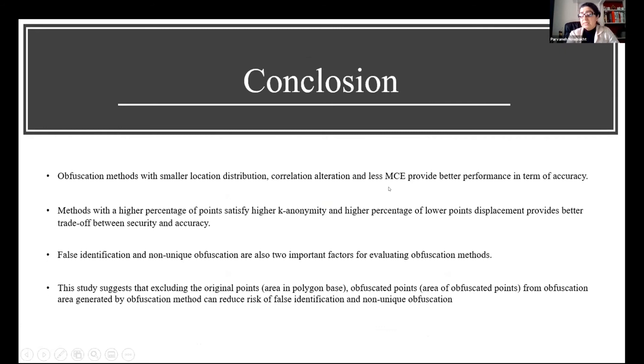We can summarize all these results as: obfuscation methods with smaller location distribution, correlation alteration, and less misclassified provide better performance in terms of accuracy. Methods with higher percentage of points satisfying higher k-anonymity and higher percentage of lower point displacement is the best trade-off between security and accuracy. False identification and non-unique obfuscation are also important factors, especially when we consider the polygon nature of the object and high point density. The study suggested that excluding the original point or area of the polygon and obfuscated points or area of obfuscated points generated by these methods can reduce the risk of false identification and non-unique obfuscation.